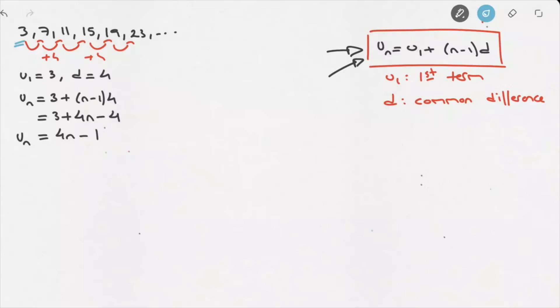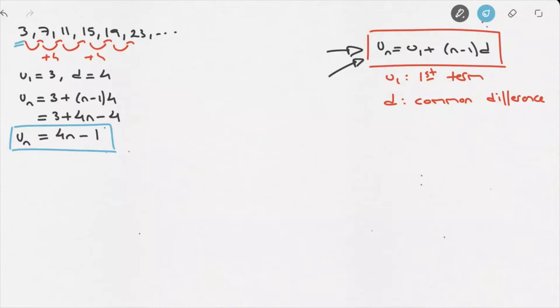So, that's this arithmetic sequence's formula. And let's just check that it works. Let's calculate, or try calculating, the third term with this formula. We can see here that we should find 11. So, let's see if this formula works. u_3 equals 4 times 3 minus 1, which equals 12 minus 1, which is 11. Perfect. So, we can see that it works. And that's the formula for the nth term of this arithmetic sequence.